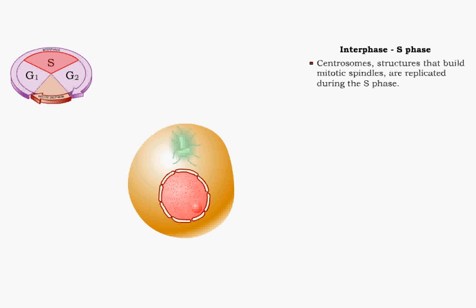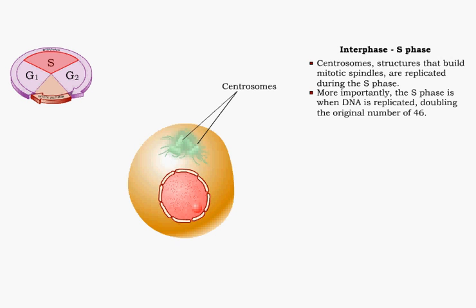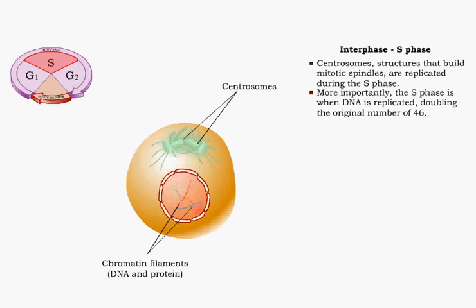Centrosomes, structures that build mitotic spindles, are replicated during the S phase. More importantly, the S phase is when DNA is replicated, doubling the original number of 46. As a result, the two daughter cells formed during mitotic cell division will be made up of identical genetic material.